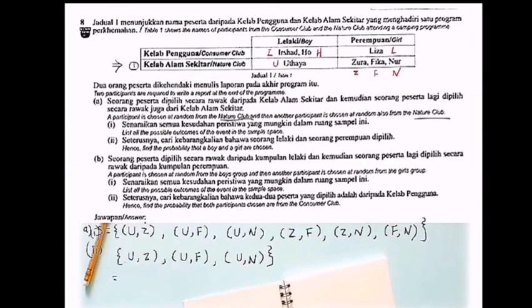So what is the probability? Three over the total is six, right? So when I simplify it, I get one over two.